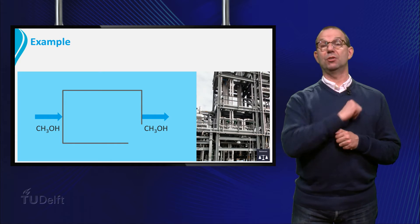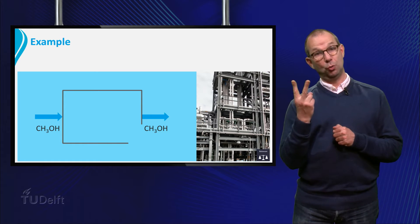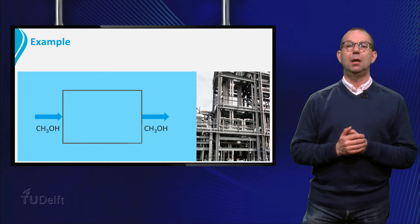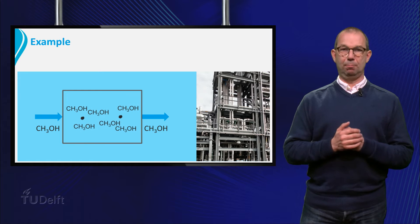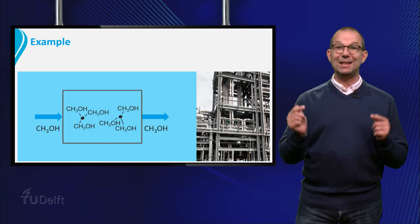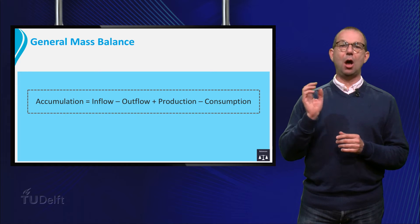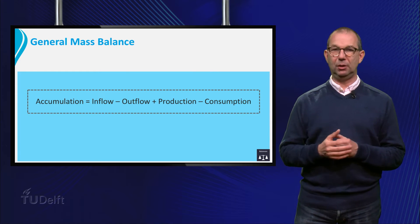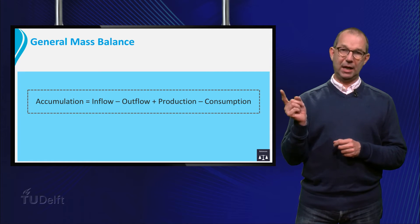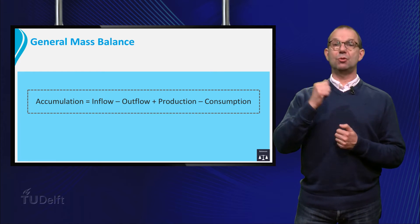We now have two options. One, methanol stays behind in the reactor, or two, methanol is converted to something else inside the reactor. In this example we take that methanol accumulates in the reactor by absorption on an impurity that stays in the reactor. If we generalize this example and cast our idea in a mathematical equation, the general mass balance can be written as: Accumulation equals inflow minus outflow plus production minus consumption.